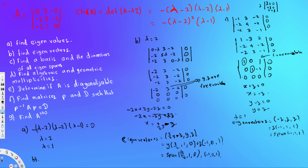For the basis and dimension of the eigenspaces: the basis for the eigenspace of lambda equals two is {(three-halves, one, zero), (minus one, zero, one)}, giving dimension two since there are two free variables. The basis for the eigenspace of lambda equals one is {(minus one, one, one)}, giving dimension one.